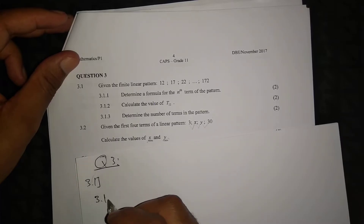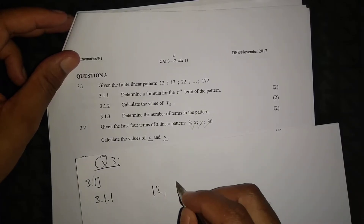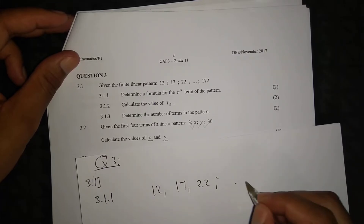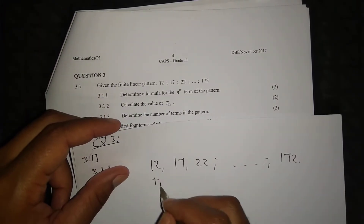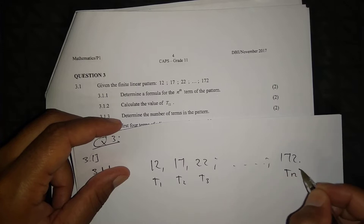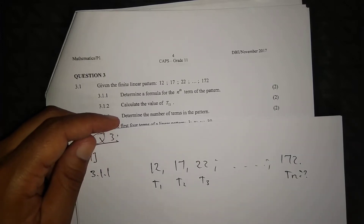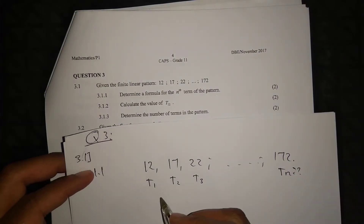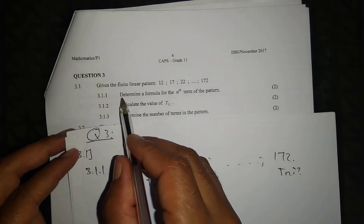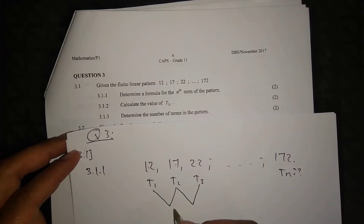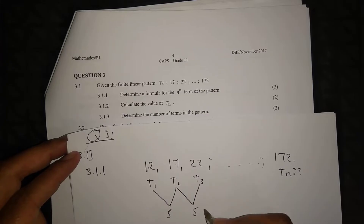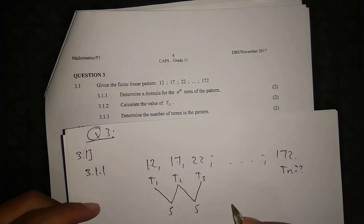So Question 3, 3.1, 3.1.1. We are given 12, 17, 22, all the way up to 172. Okay, from this pattern, t1 is 12, t2 is 17, t3 is 22. But this last term is t-something — I know it's the last term in this pattern. So we need to determine the formula for the nth term of the pattern. The common difference: 17 minus 12 is 5, 22 minus 17 is 5. So this is the common difference.